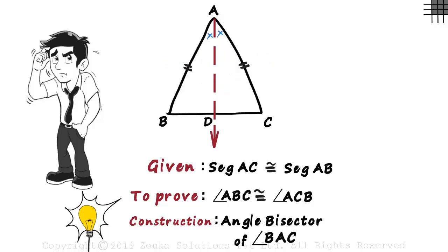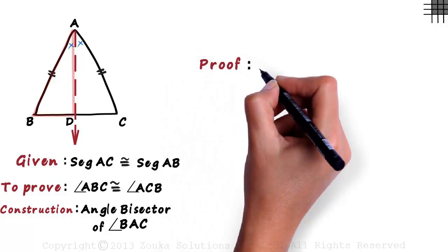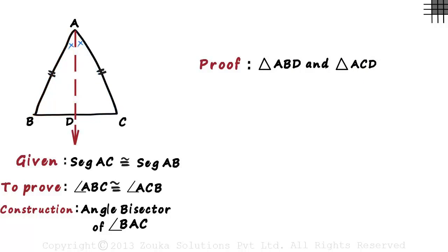After we have jotted down the data given and the to prove section, we go to the proof. We have to look at triangle ABD and triangle ACD. Have we been given any data about the two triangles?